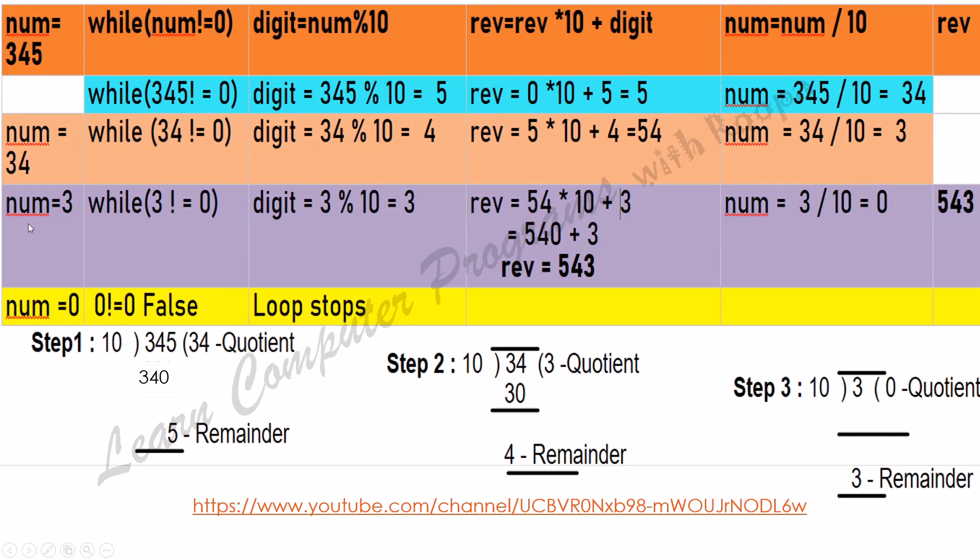So the value of num has now become 3. While 3 is not equal to 0, digit will be 3 mod 10. I have explained in detail how I am getting this remainder 3 in my previous video; please watch that. Digit equals 3 mod 10, which will give me the value 3.